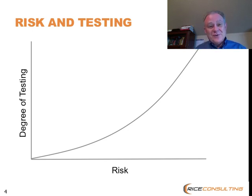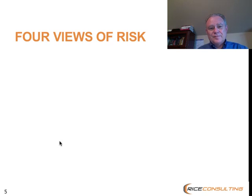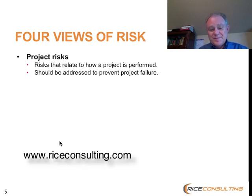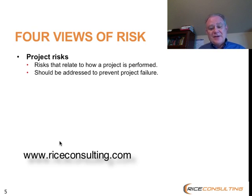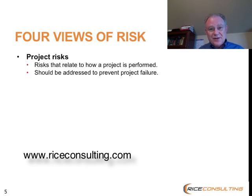Not everything is going to be a high risk. Let's look at some of the types of risk we might see on software projects. First, you have project risk — these relate to how the project is being performed: project management, staffing, third-party supplier relationships, user interaction, and stakeholder engagement. These are things you want to proactively identify early in a project and do something about to help prevent project failure. In fact, if you identify risks and don't do anything about them, then all you have is good information — you really haven't done anything.